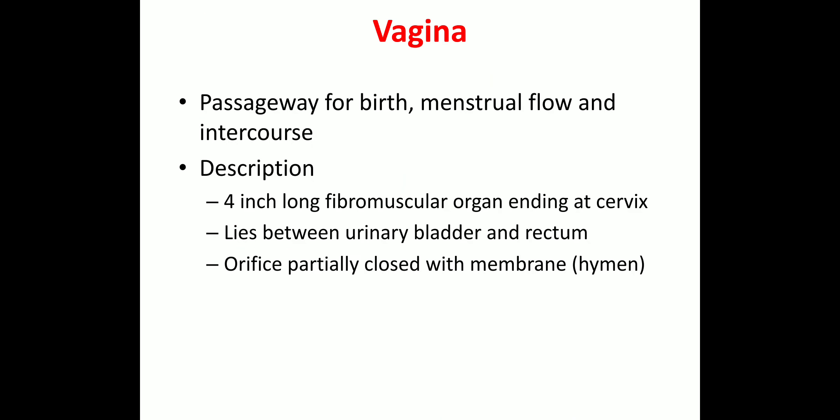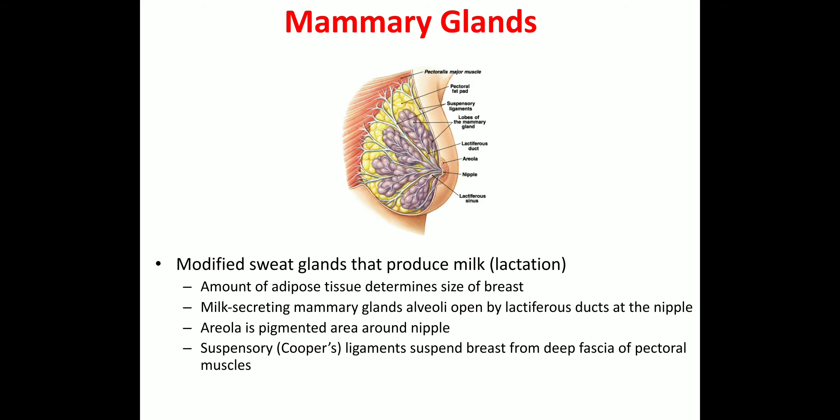The vagina is the passage for birth, menstrual flow, and intercourse. It is a four-inch long fibromuscular organ ending at the cervix, lying between the urinary bladder and the rectum. Its orifice is partially closed by the membrane called the hymen.